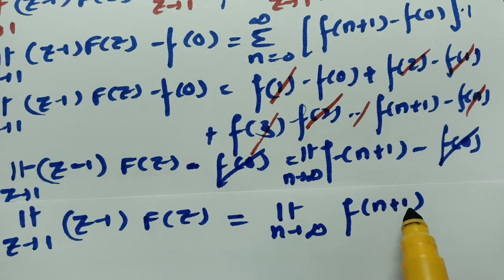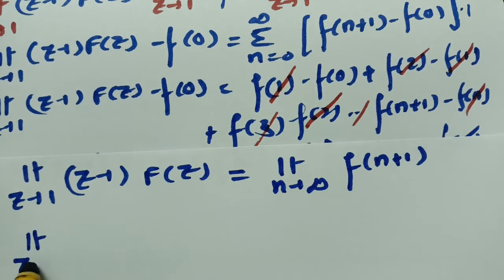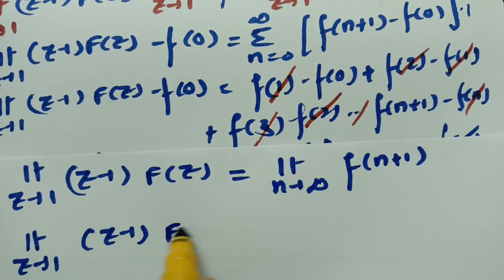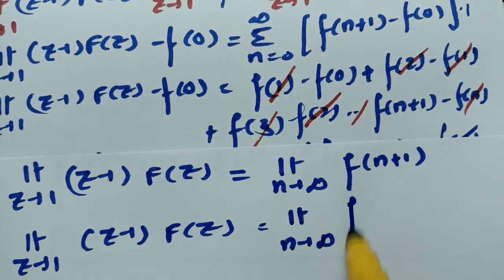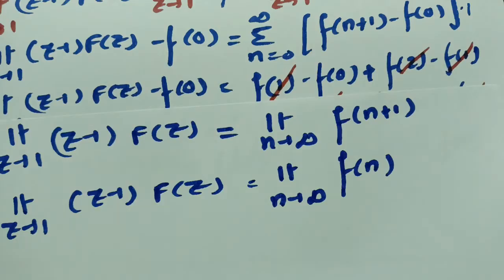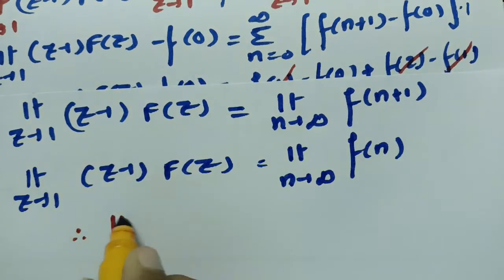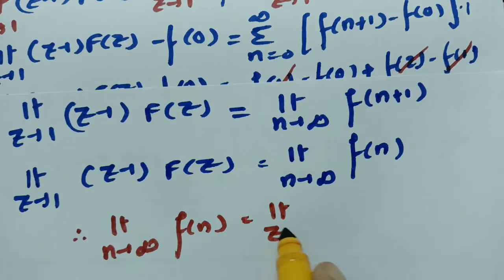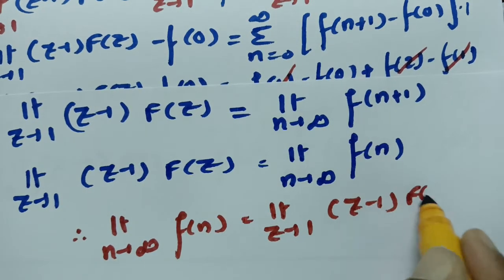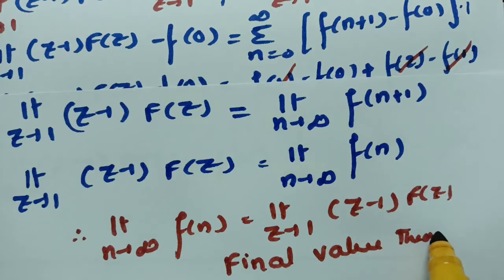As n tends to infinity, n plus 1 also tends to infinity, so f(n+1) can be written as f(n). Therefore, limit n tends to infinity of f(n) equals limit z tends to 1 of (z minus 1) into capital F(z). This is the final value theorem.